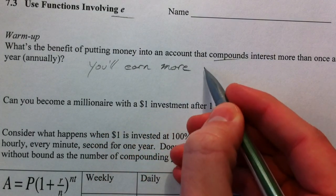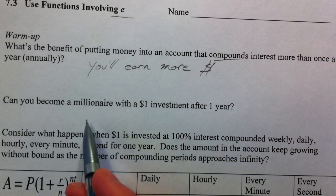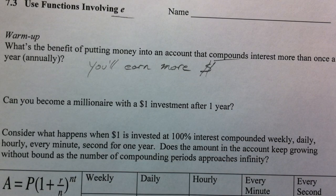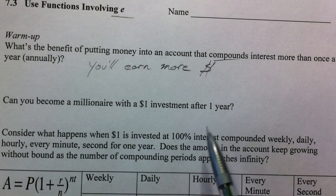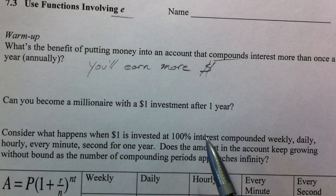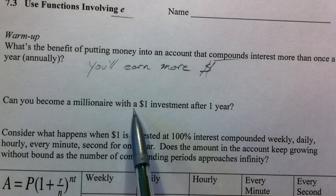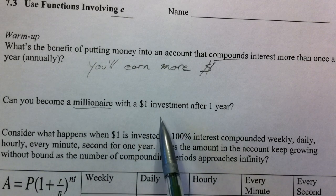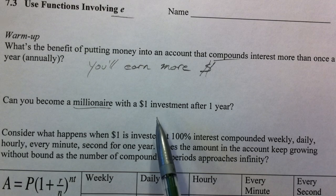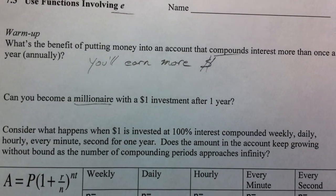Now, you'll earn more money the more and more you compound it. And so if we compounded it so quickly, if we compounded it every second or even every millisecond, could we make a million dollars off of just a one dollar investment after one year? Well, let's see. Let's see what happens.